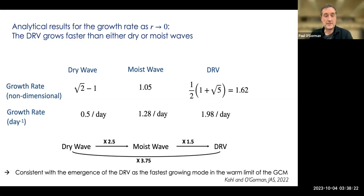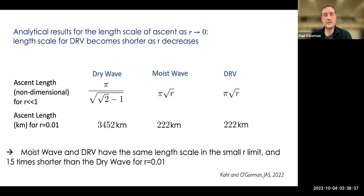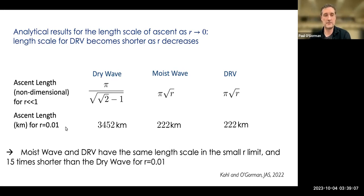This overall picture is consistent with the emergence of the DRV as the fastest growing mode in the warm limit of the GCM, because that is the baroclinic structure that grows the fastest in that limit. You can also look at the length scale — specifically the length scale of the ascent region. In the limit of omega tending to zero with very strong latent heating, the moist wave and the DRV have the same length scale but are much smaller than the dry wave. As omega tends to zero, the length scale actually goes to zero in this model, so other things may come in to limit it, but we get length scales of about 200 km for the DRV in that limit.